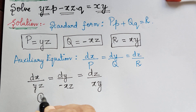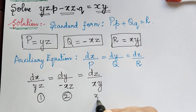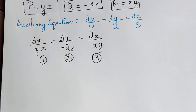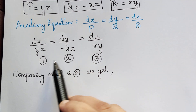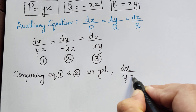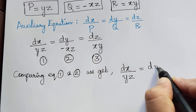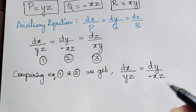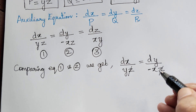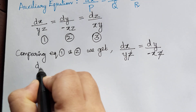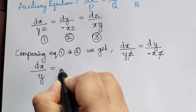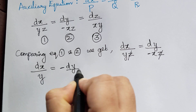Let us label these as equation 1, 2, and 3. Comparing equations 1 and 2, we get dx over yz equals dy over negative xz. We observe that z appears on both sides and can be cancelled, giving us dx over y equals negative dy over x.